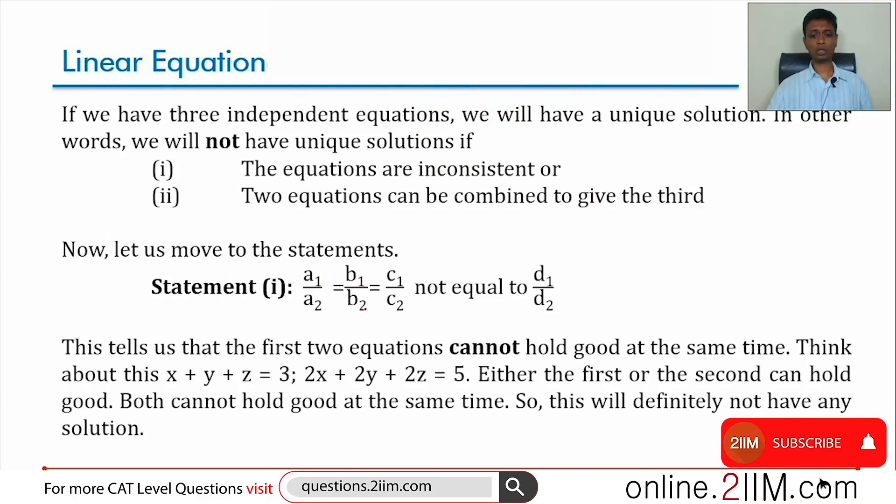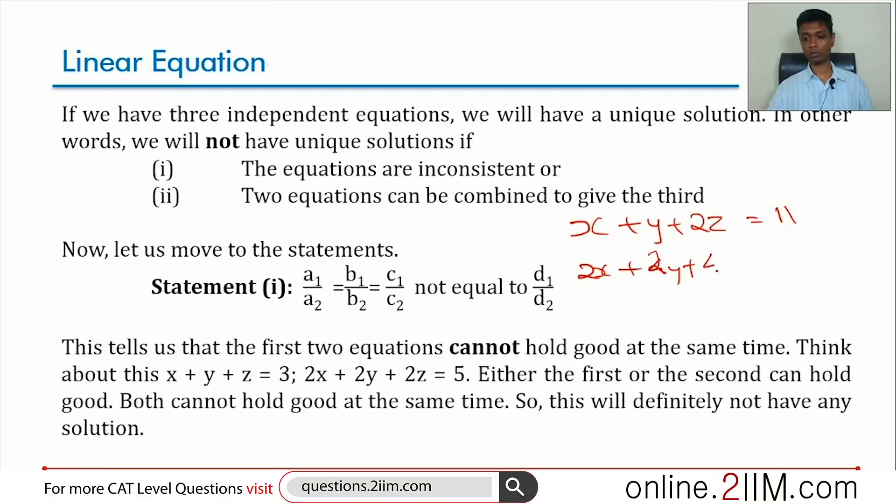a1 by a2 equal to b1 by b2 equal to c1 by c2 not equal to d1 by d2. It is like x plus y plus 2z is 11, 2x plus 2y plus 4z equal to 90. Something like this. This part is just a multiple of this. This is different.